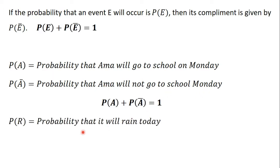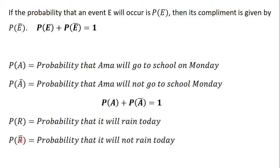We also considered the rain example: if P(E) is the probability that it will rain today, then P(E complement) gives us the probability that it will not rain today. And if we add P(E) to P(E complement), we are going to get 1.